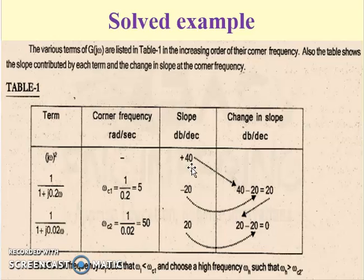The corner frequencies are 1/0.2 which equals 5 radians per second, and 1/0.02 which equals 50 radians per second. Next we form a table where the terms are listed in increasing order of corner frequency. The second term is 1/(1 + j 0.2 omega) with corner frequency 5 rad/sec and slope -20 dB/dec. The change in slope becomes the previous +40 plus -20, giving +20. The third term has corner frequency 50 rad/sec with slope -20, and change in slope becomes 20 - 20 equals 0. The change in slope is always found by adding the previous slope plus the present slope.